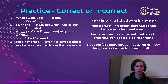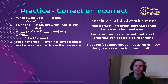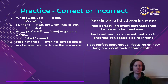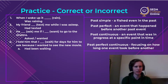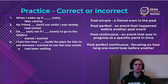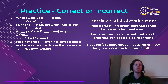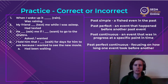The fourth sentence: 'Then I told him that I ___ for days for him to ask because I wanted to see the new movie.' Remember the importance of 'for.' The correct answer is 'had been waiting' — past perfect continuous. He asked me if I wanted to go to the cinema, and before that, I had been waiting day after day because I really wanted to see this movie. I use the past perfect continuous to emphasize that time — to really show I had been waiting for days.